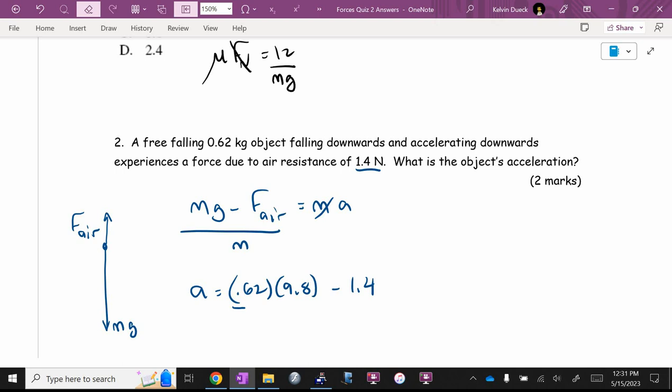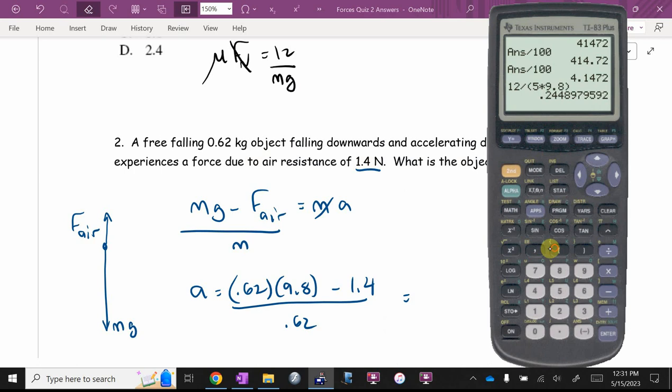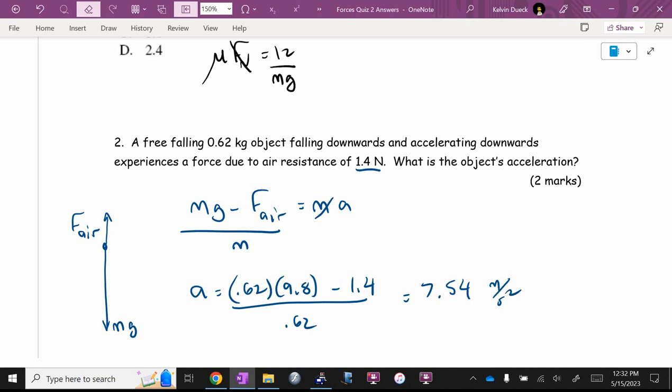Divided by 0.62. I have no idea what the answer is. Bracket 0.62 times 9.8 minus 1.4, close off the top, divided by 0.62. Are you starting to see why I told you at the beginning of this unit I can't come up with every equation for you? You're going to have to derive them on your own. It's winner minus loser equals MA. Is it 7.54? Anybody else? And meters per second squared. Make sure the units are right.